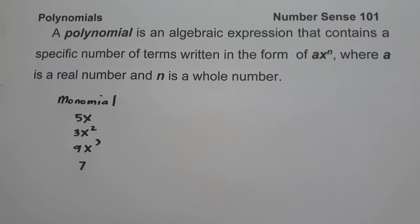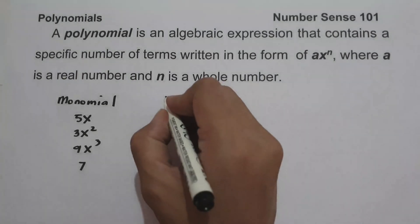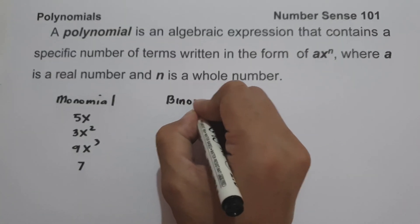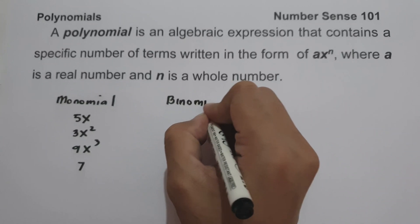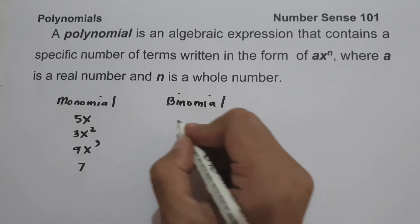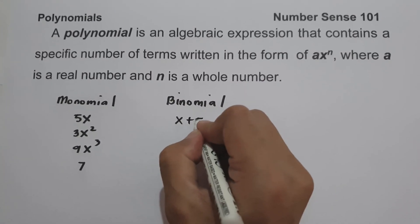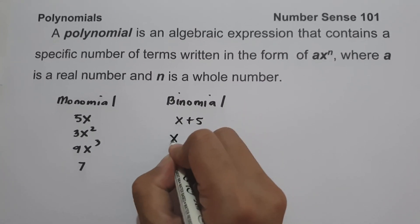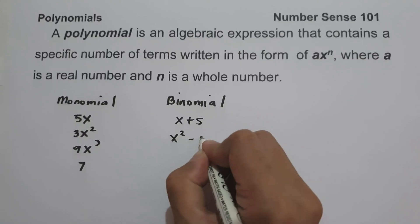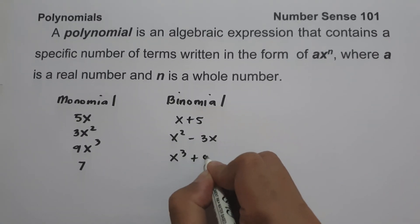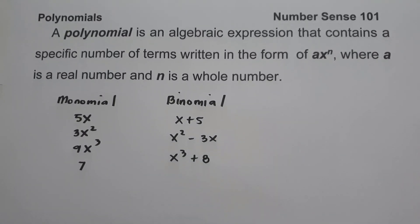Aside from that, we have a binomial. A binomial is a polynomial with two terms. For example, x plus 5, x squared minus 3x, and x cubed plus 8.